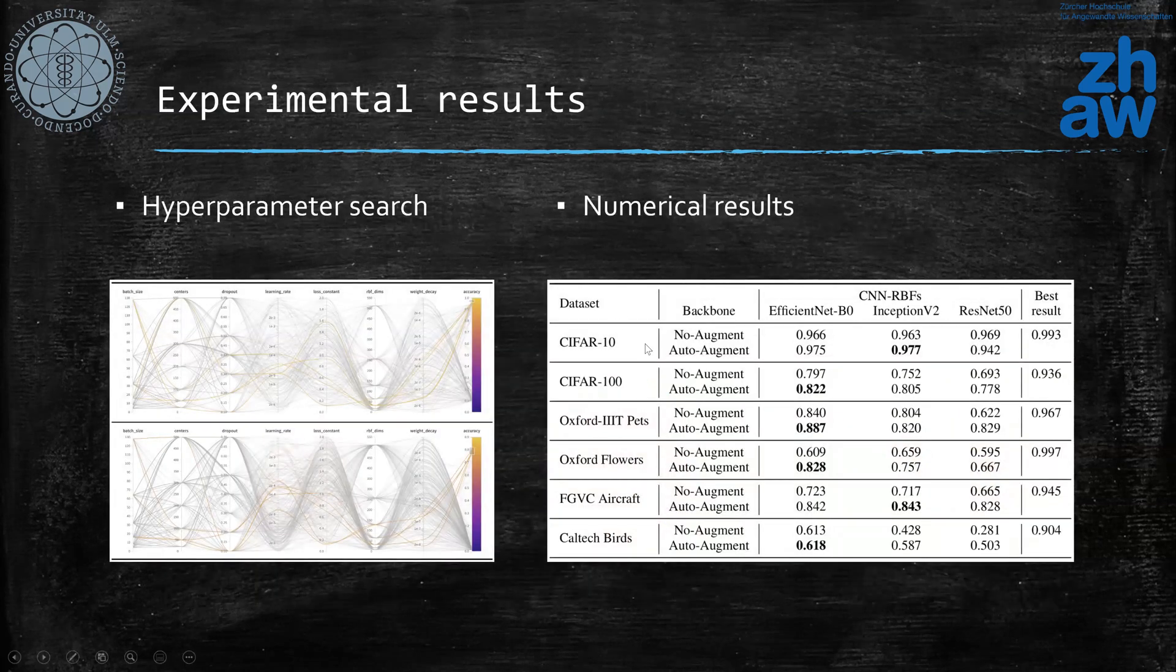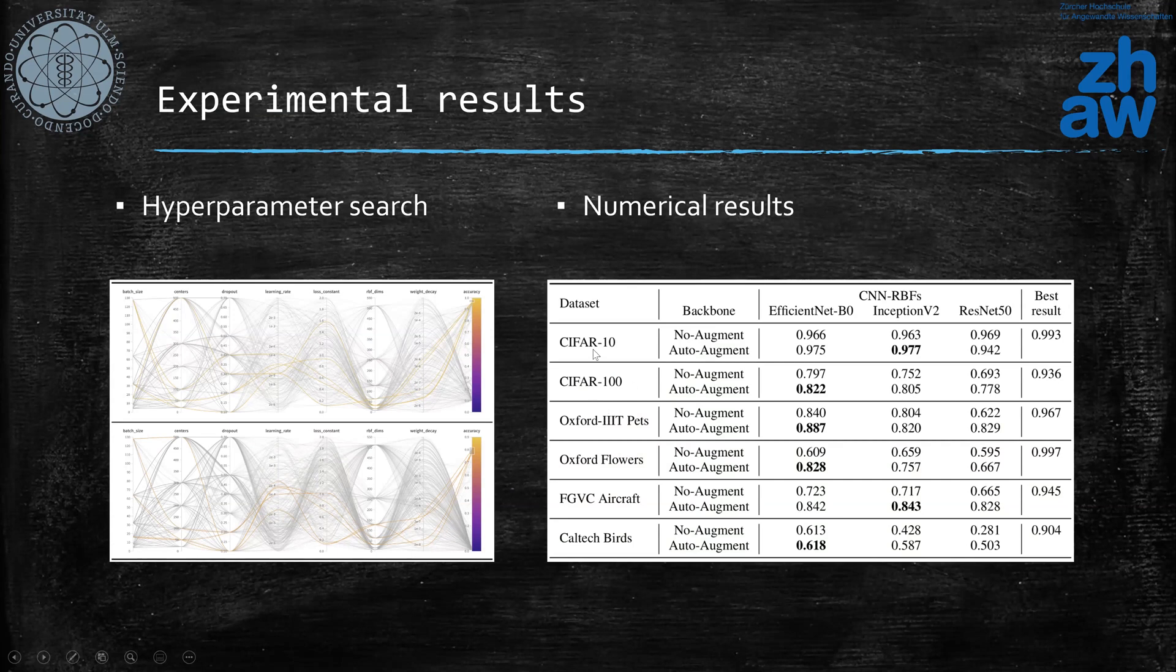Furthermore, we used some benchmark computer vision datasets in order to confirm that this architecture can work for more complicated problems. Though we noticed that picking the correct set of hyperparameters, including number of clusters, as well as the input dimensionality of the RBF, is not all the time trivial, so we had to use the Weights and Biases toolbox in order to have a hyperparameter search.